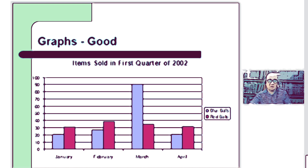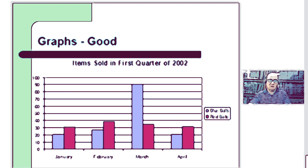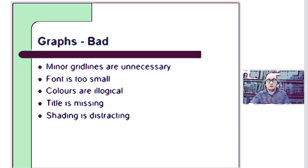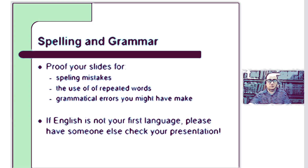This is a good example of a graph — it has a title and numerical values are easily understood when presented in graph form. This is a bad type of graph because minor grid lines are unnecessary, the font is too small, colors are illogical, the title is missing, and shading is distracting. Avoid these issues when using graphs.